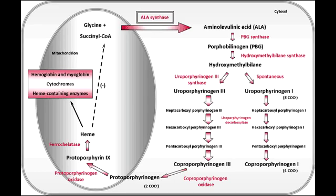The next step in heme synthesis is the conversion of Hydroxymethylbilane to Uroporphyrinogen 3. What is the name of the enzyme that converts Uroporphyrinogen 3 to Coproporphyrinogen 3? The enzyme that catalyzes this reaction is Uroporphyrinogen Decarboxylase. The condition in which there is a defect in Uroporphyrinogen Decarboxylase is Porphyria Cutanea Tarda, which is the most common porphyria. One way to remember that these last two enzymes are associated with porphyrias is to note that there is some sort of porphyria word in their names.